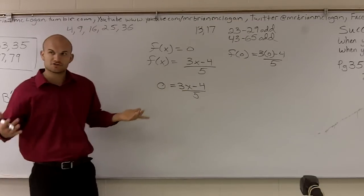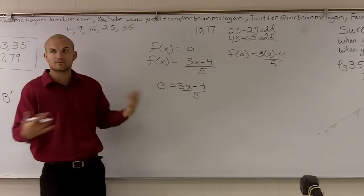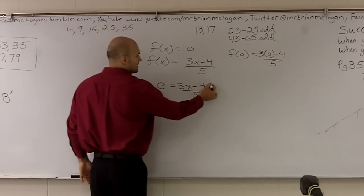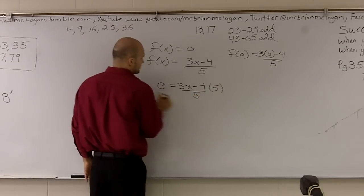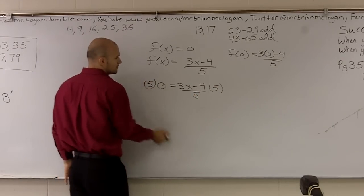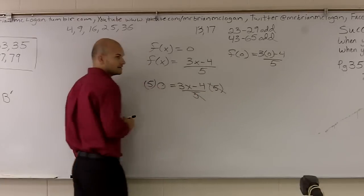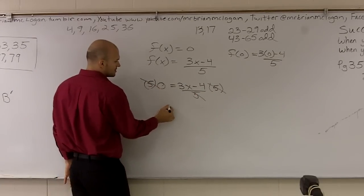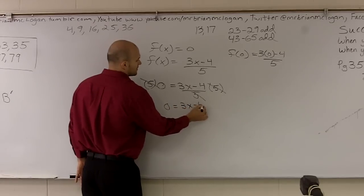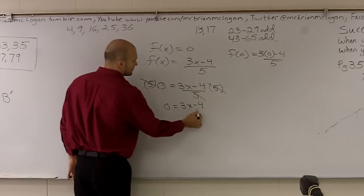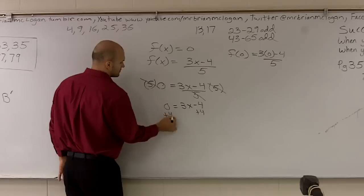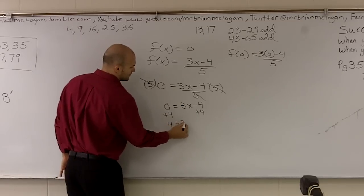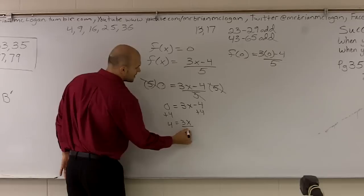Now to solve for x, I just have to use my algebra skills. Whenever you have a fraction, we like to get rid of it, so we multiply by 5. Those two fives are going to cancel out. That's going to give us 0. So therefore, I'm left with 0 equals 3x minus 4, add 4, divide by 3.